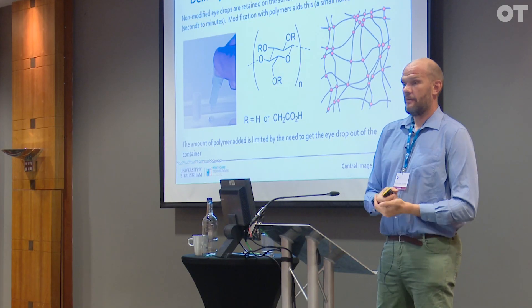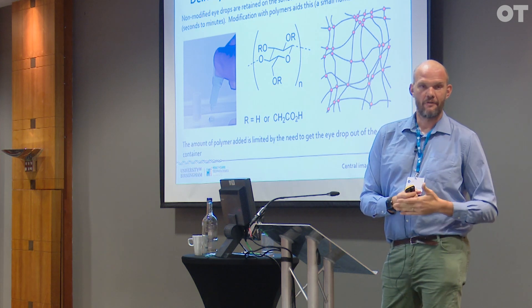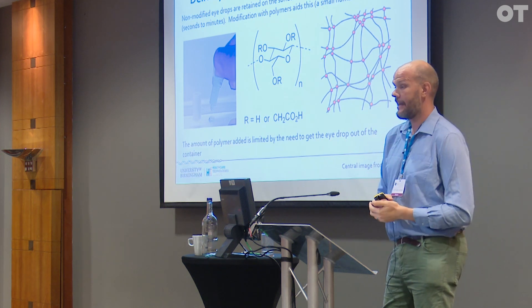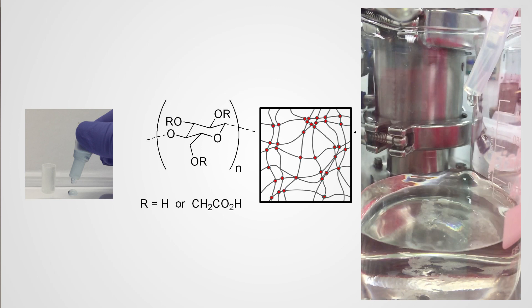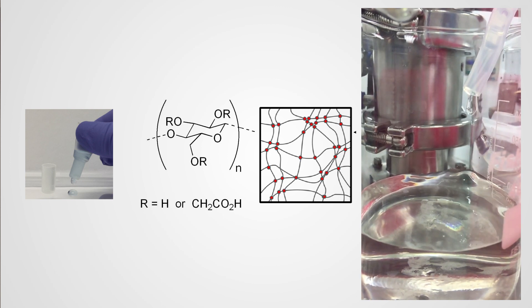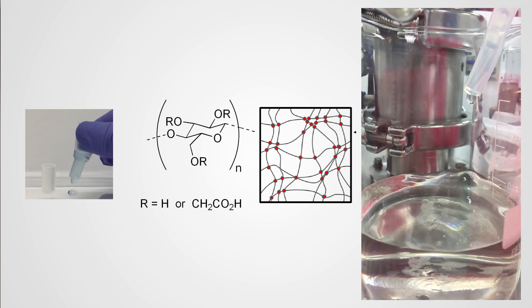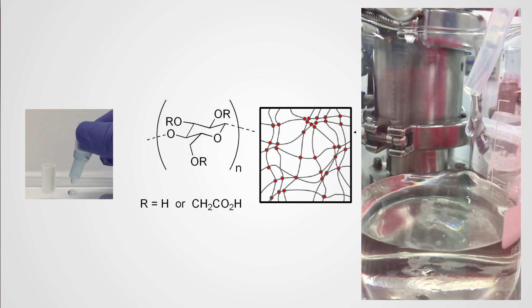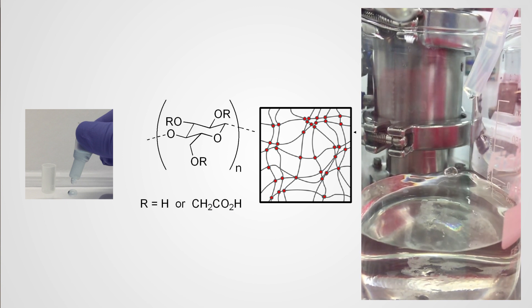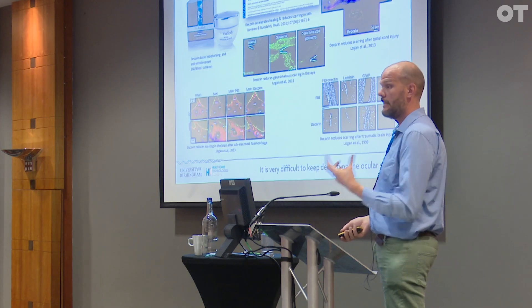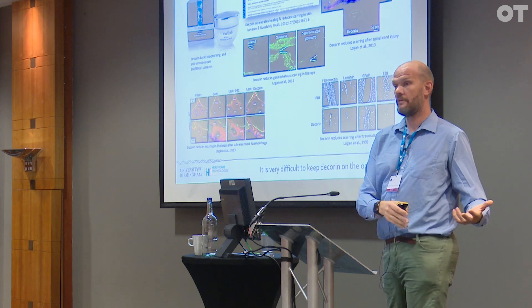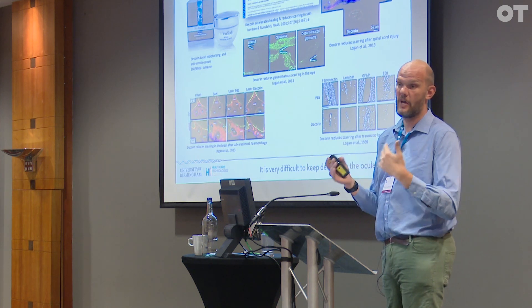Now what we're doing in my group is working a lot on eye drops. Eye drops themselves, if they're made without any kind of structuring, are retained on the eye for only a matter of seconds. If you're able to thicken the eye drops by adding polymer into them, the polymer chains start entangling with each other, and that creates a more viscous solution that can be retained on the surface of the eye for much longer.